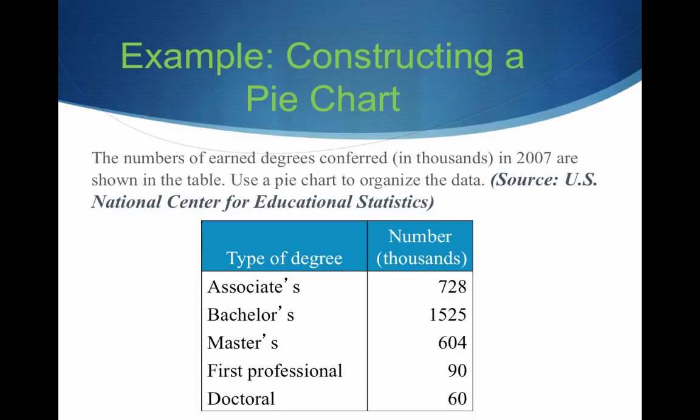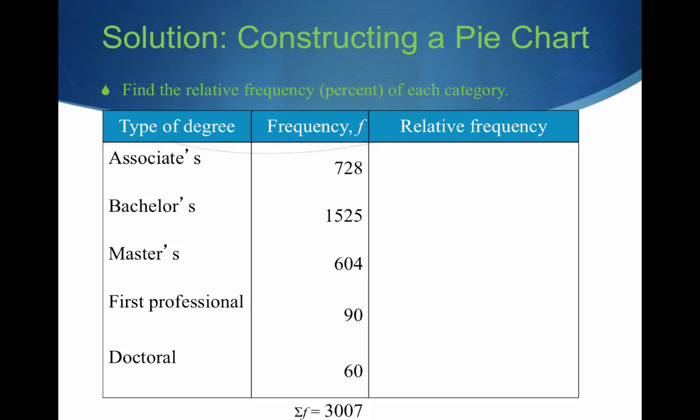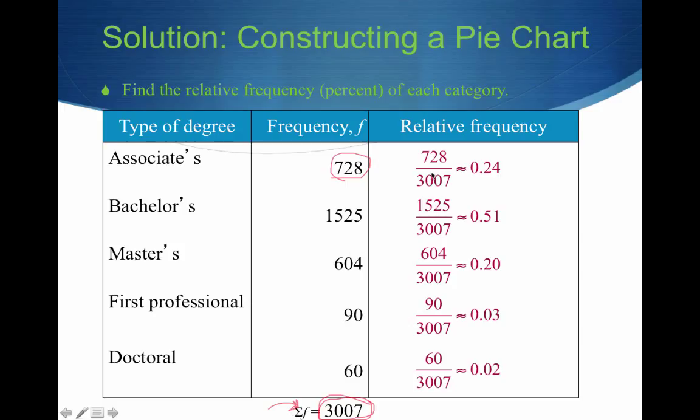All right? So let's take a look at an example. The numbers of earned degrees conferred in thousands in 2007 are shown in the table. We want to take this data and make a pie chart. Well, how are we going to do that? Well, first we need to calculate the relative frequency. Hopefully you remember from the first lecture this week that the relative frequency is just going to be the actual frequency divided by the sum of all the frequencies or the sample size. So by adding up all my frequencies, I see that the sum of the frequencies is 3,007. Don't let this crazy sigma scare you. It's just stats language for telling you to add everything up. Sum all the frequencies. And so if I want my associate's relative frequency, I'm just going to take the 728 and divide it by 3,007 to get roughly 24% or 0.24. And I'm going to do this for my bachelor's, my master's, my first professional, and my doctoral degrees.